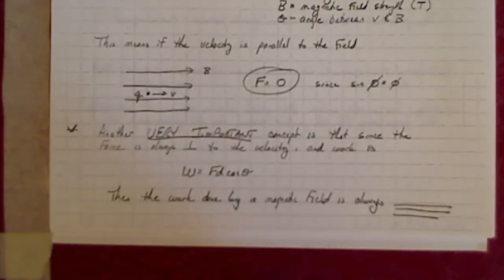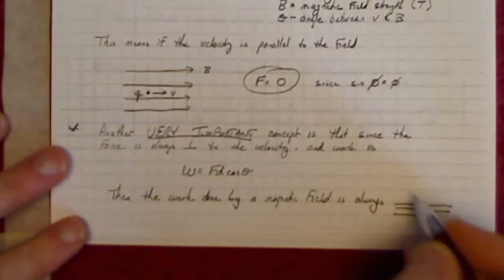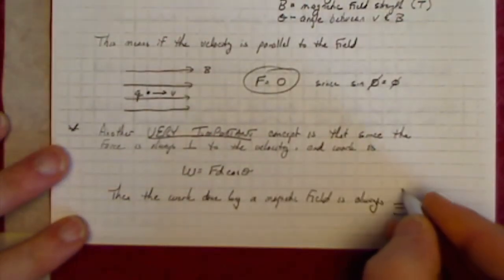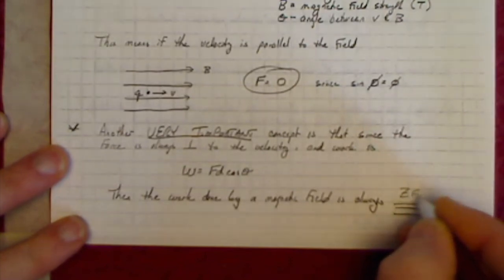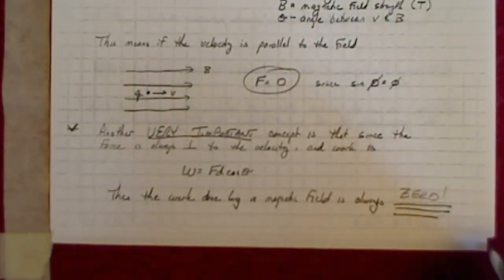Well, if theta is always going to be 90 degrees, because the force is always perpendicular to the velocity, that means that your work is always going to be zero done on a particle moving through a magnetic field.